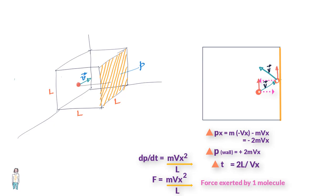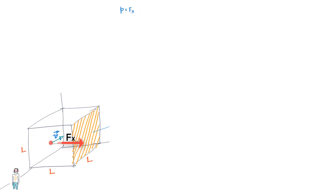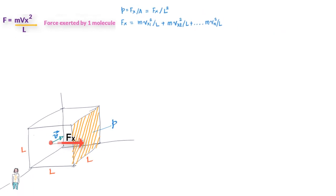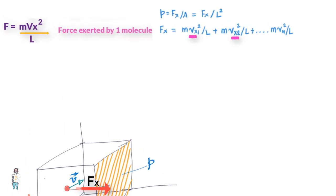While doing so we must remember that the velocity of each molecule could be different. So if the total force delivered is Fx, then the pressure on the wall equals Fx upon A which equals Fx upon L squared. So we can write the total force Fx equals mvx1 squared upon L plus mvx2 squared upon L and so on till you get to the nth or the last molecule.